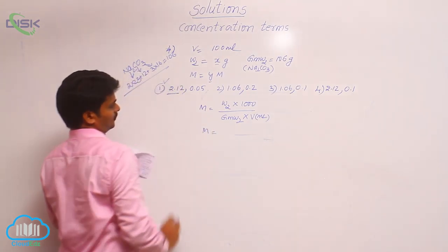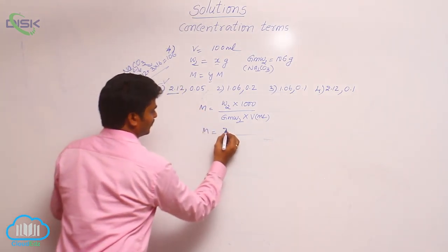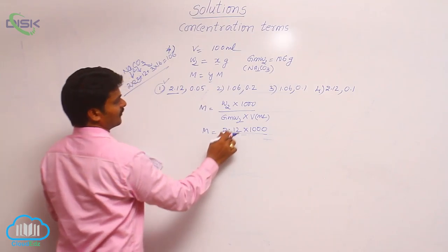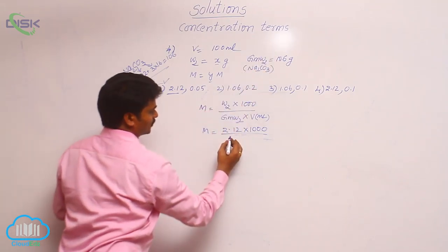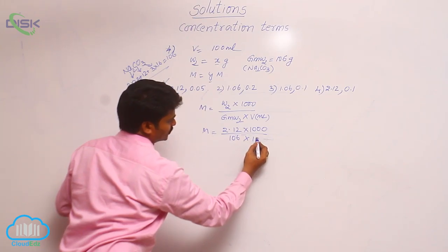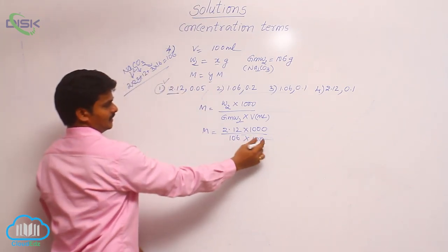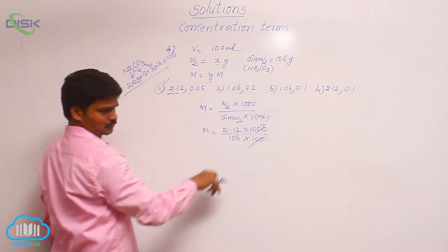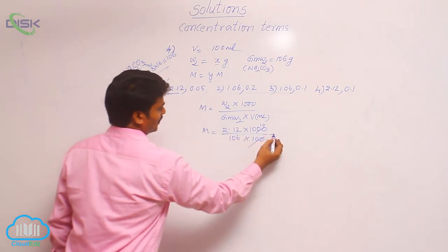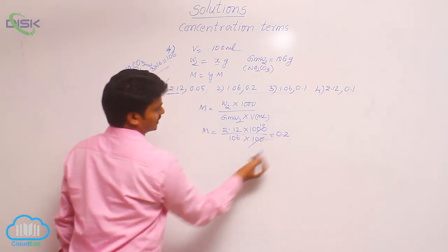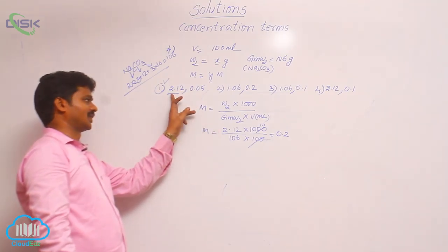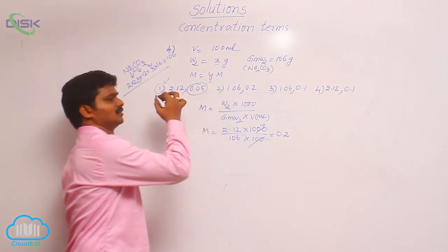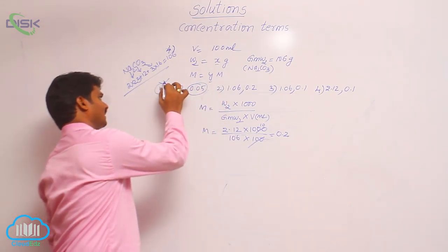Verifying option 1: molarity = 2.12 × 1000 divided by 106 × 100. In 1000 divided by 100, we get 10 times. So 10 × 2.12 = 21.2. Dividing 21.2 by 106 gives 0.2. So substituting the first value gives 0.2, but option 1 states 0.05. That is why option 1 is not the answer.